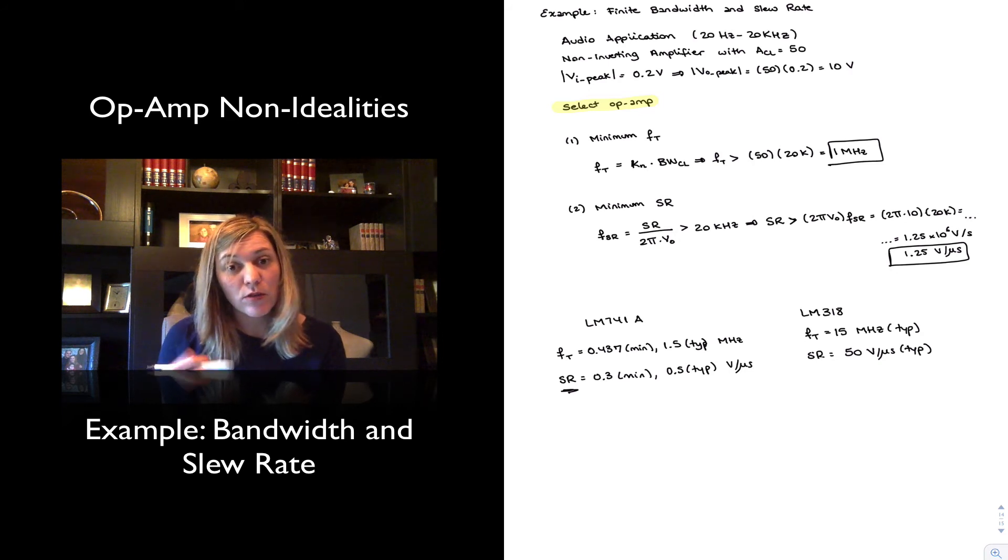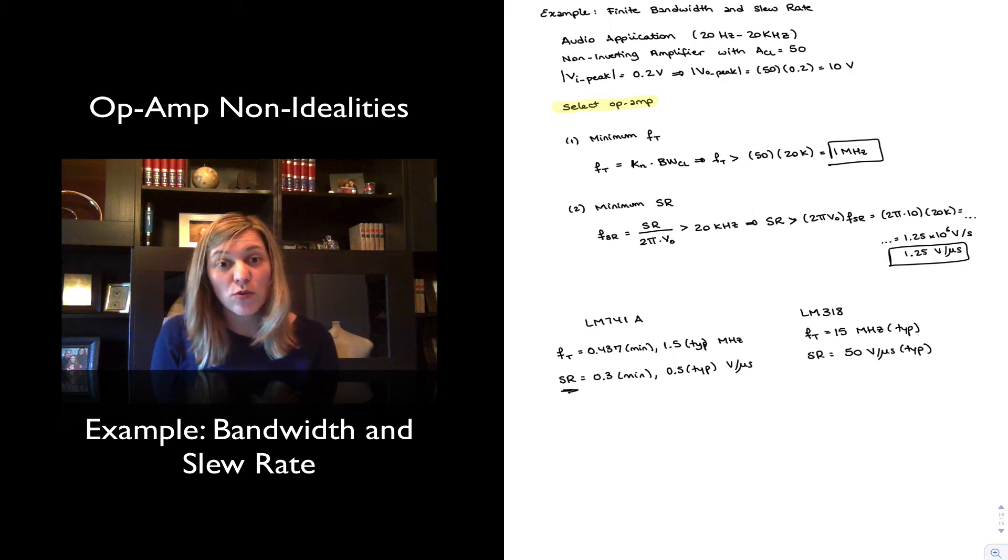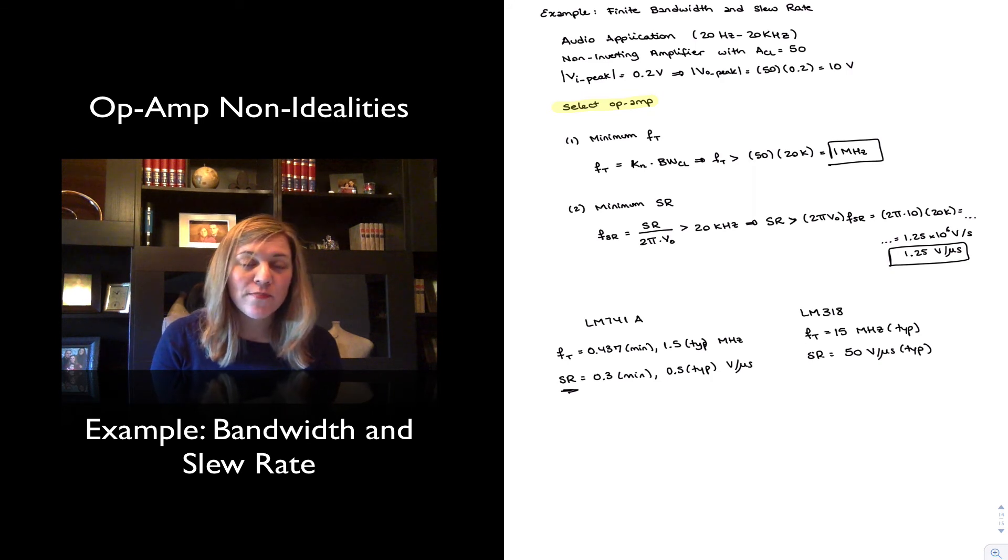Whenever we can, whenever a datasheet gives us worst-case values, we want to use those in our calculations. They not always give worst-case values, in which case we typically will have to go with either typical or select another op-amp which shows us minimum values if that particular parameter is really critical for performance in our circuit.